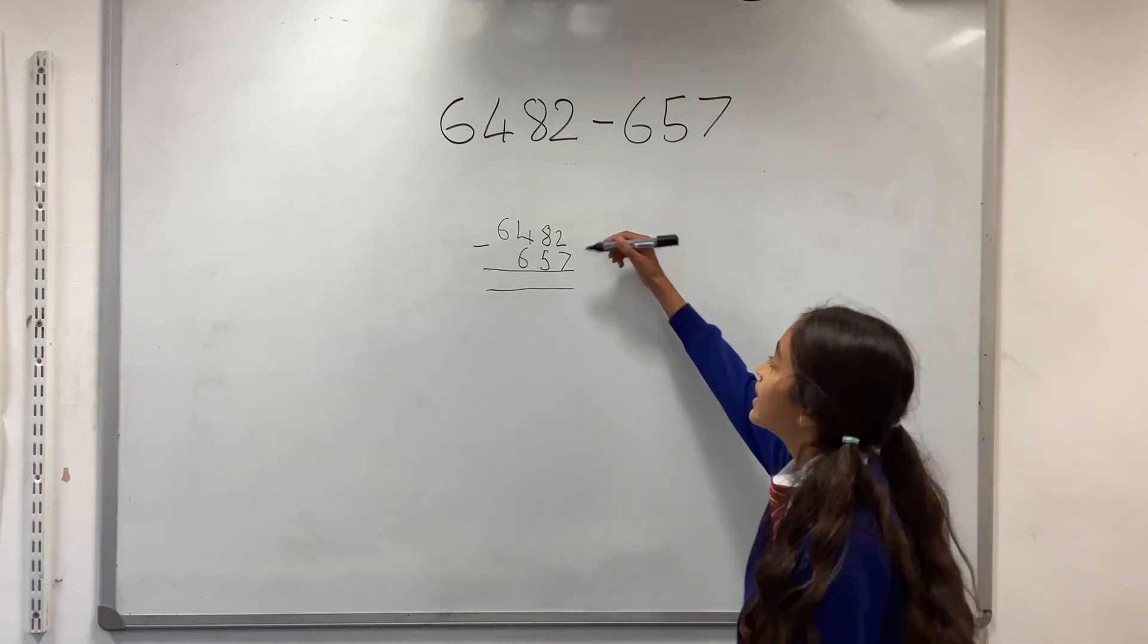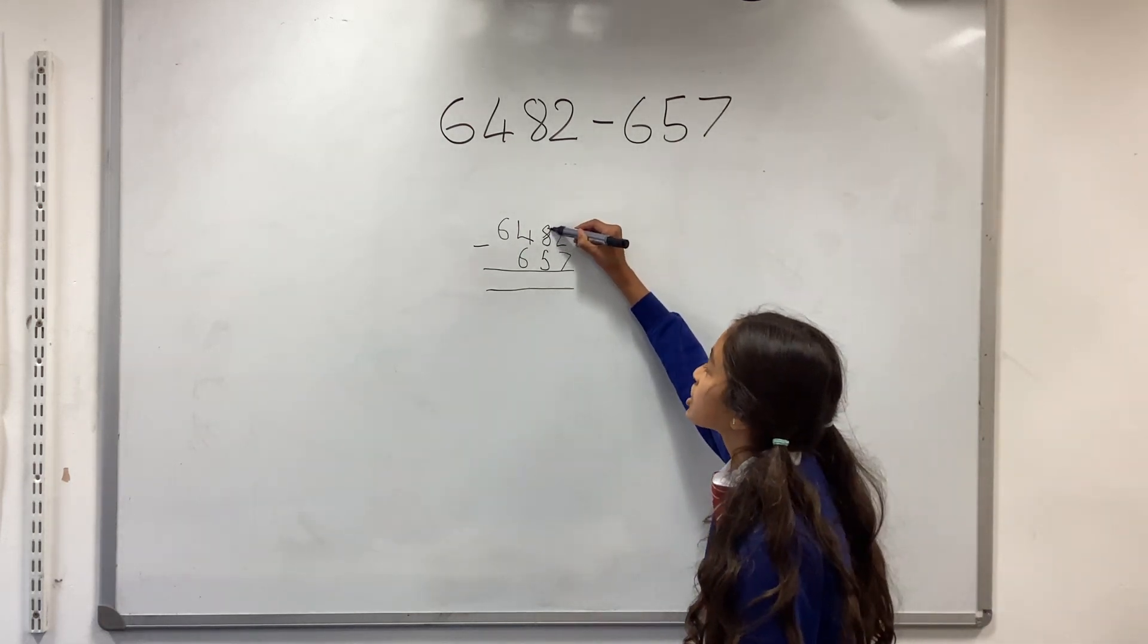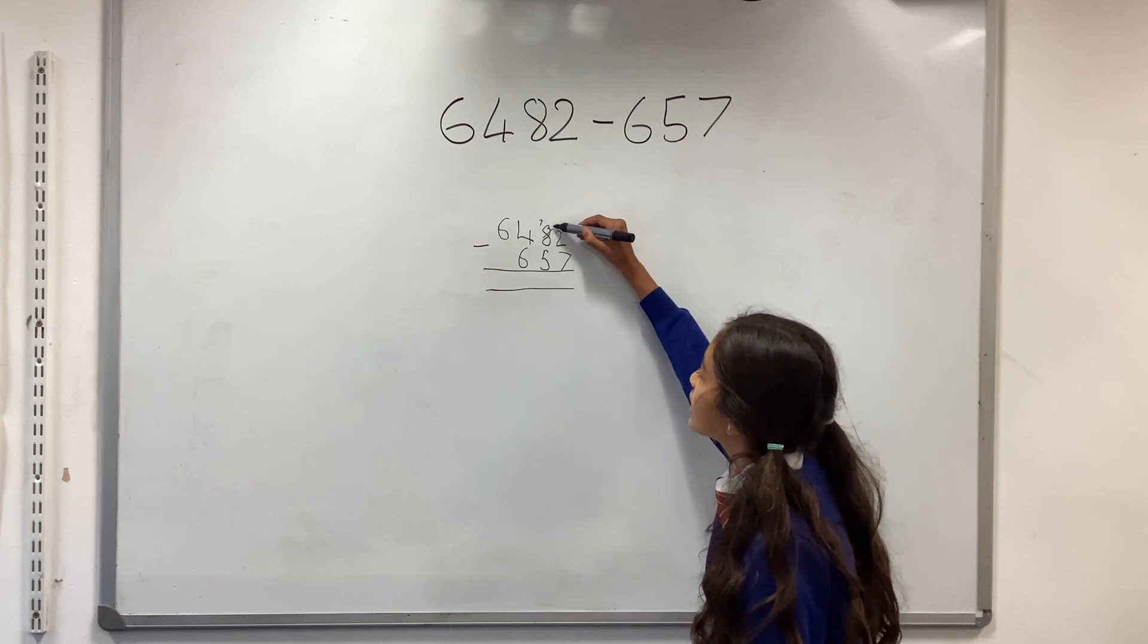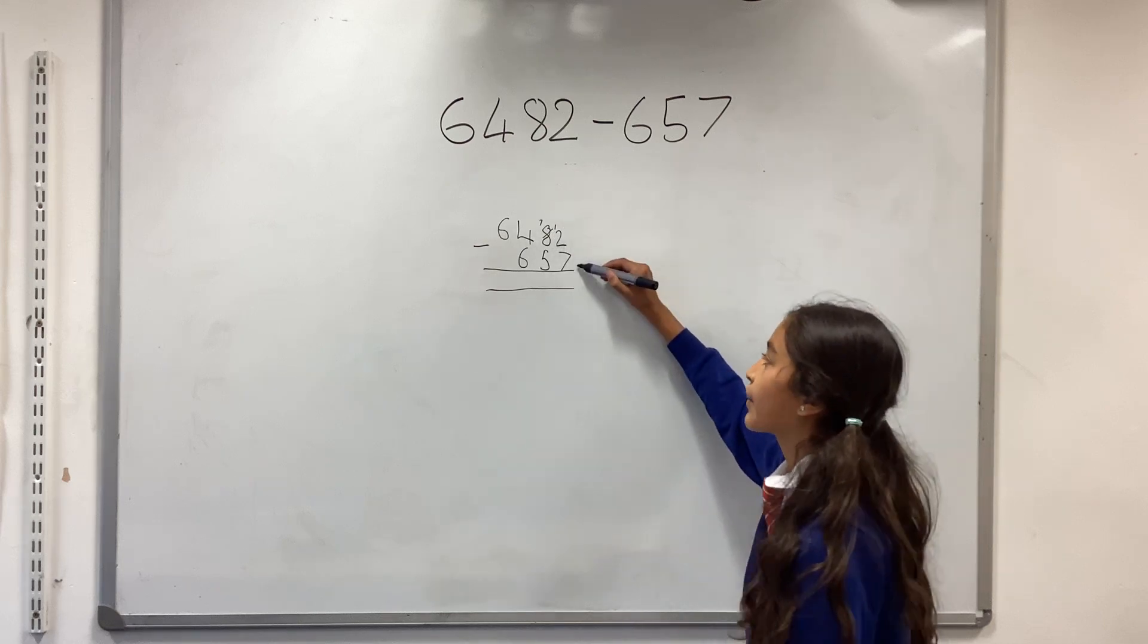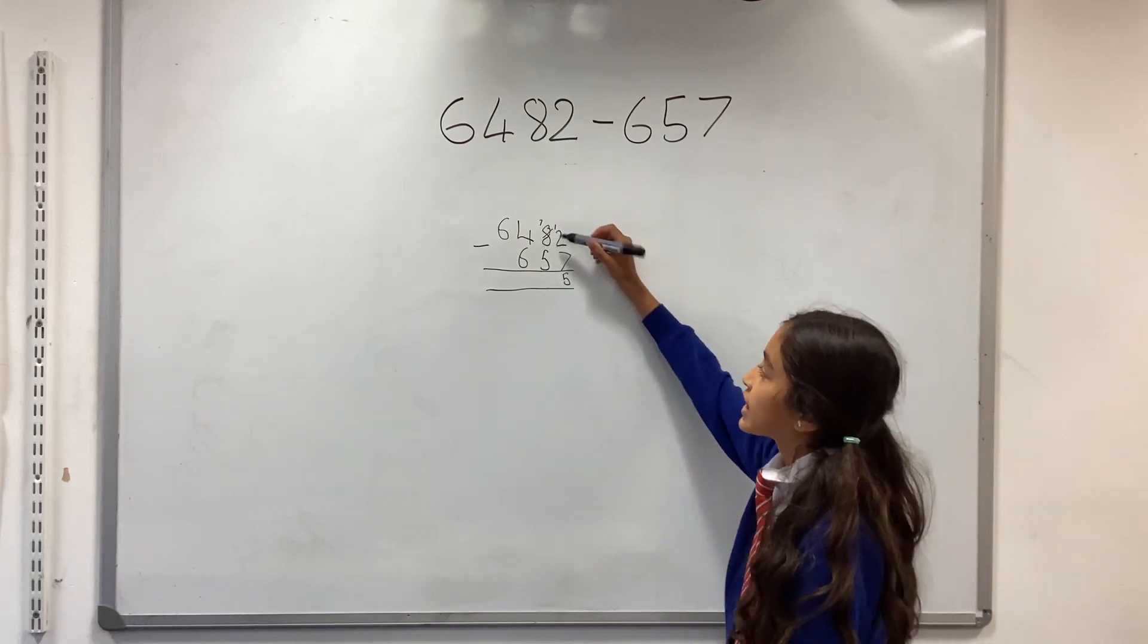Two take away seven, we can't do that, so you need to exchange. One, this comes seven, and this is 12 take away seven, which equals five. And then you go to the next column, seven take away five equals two.